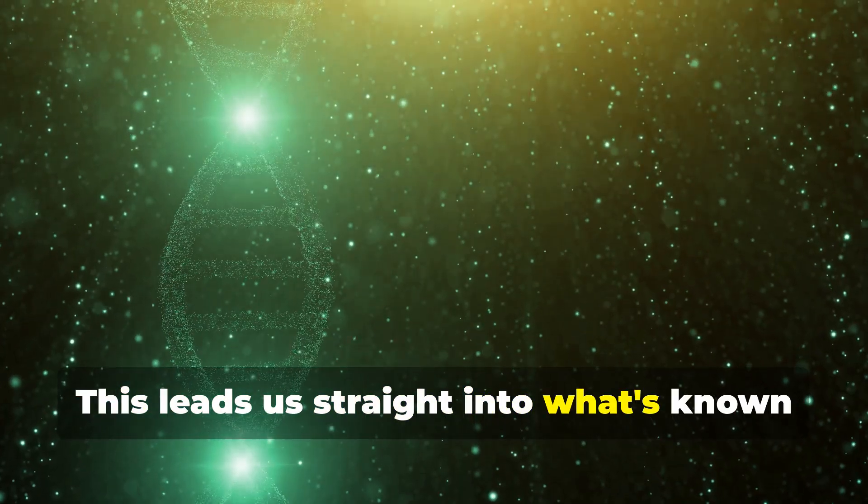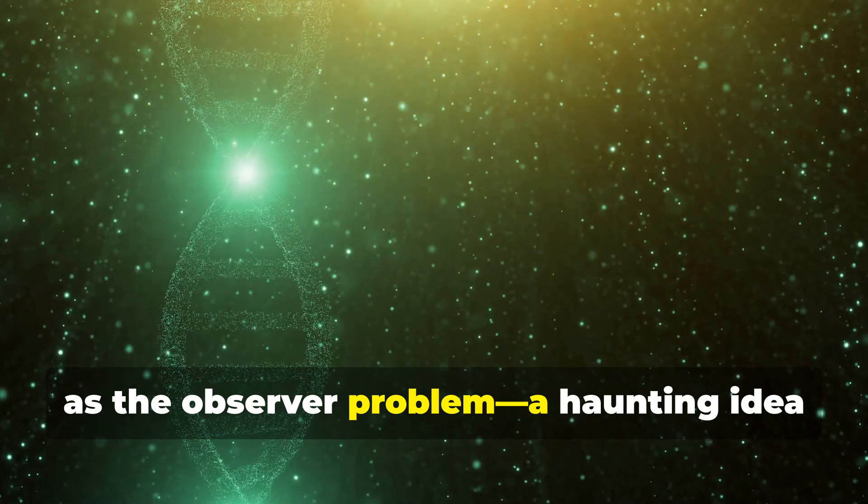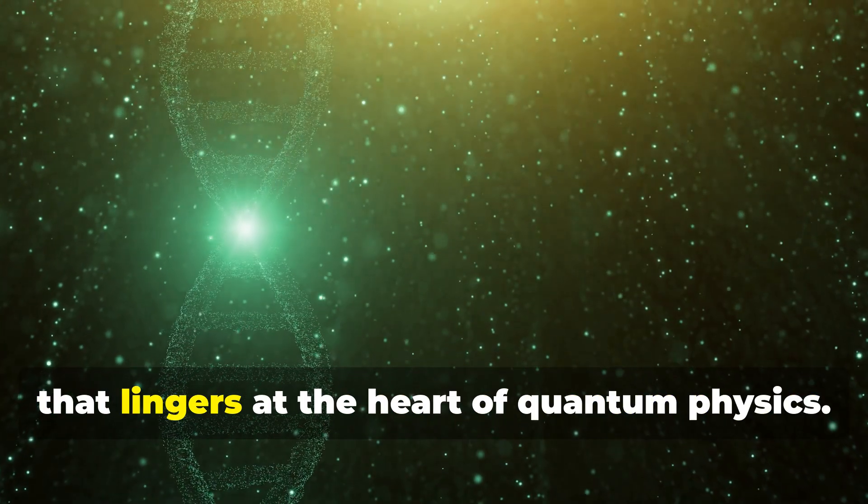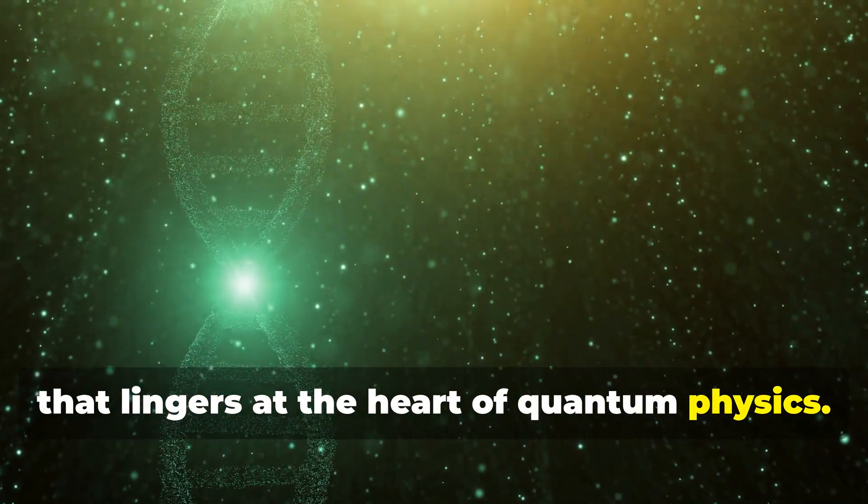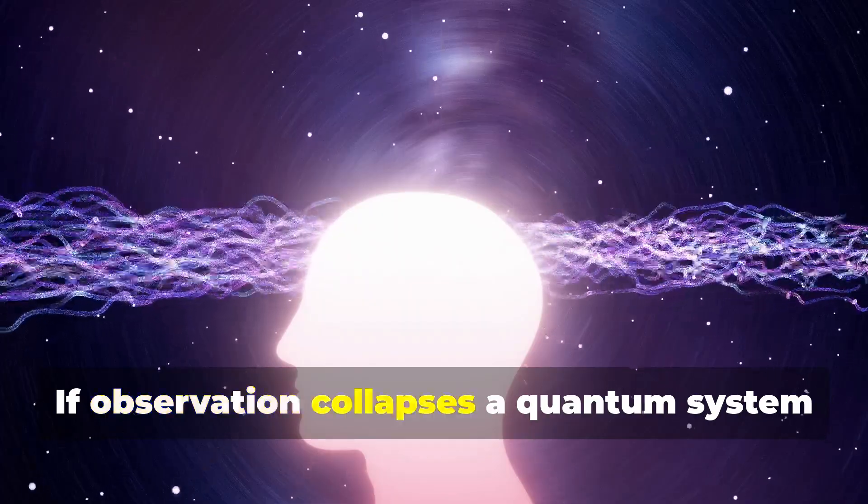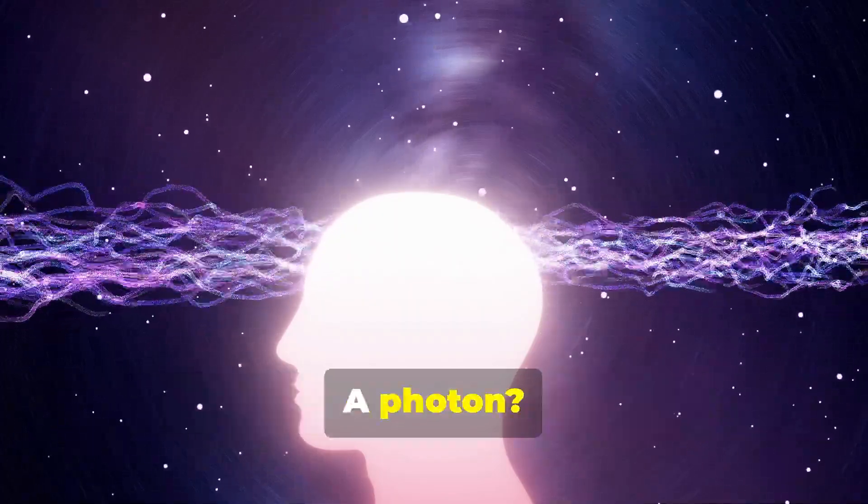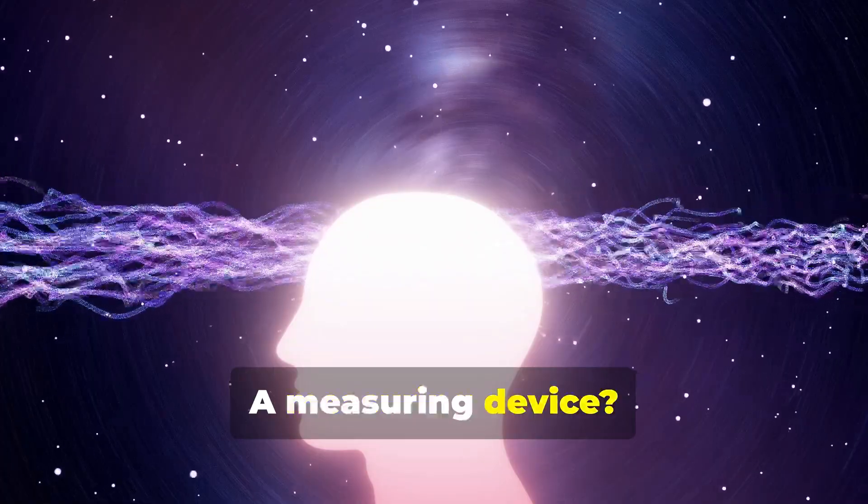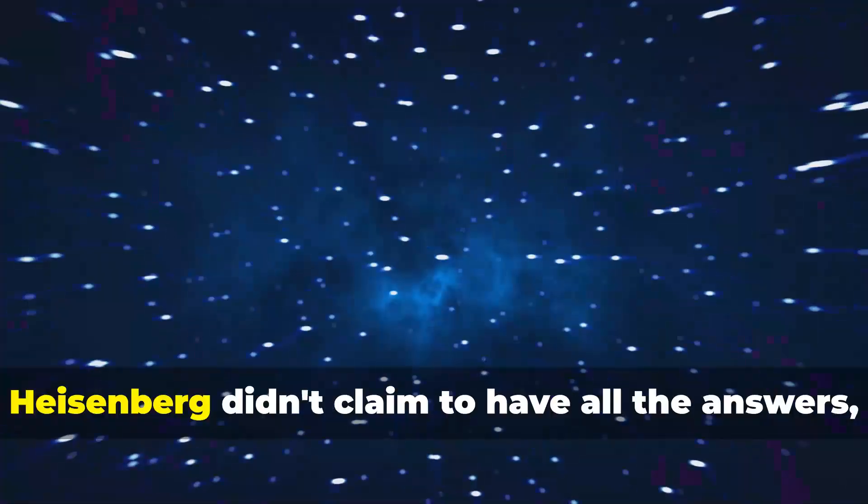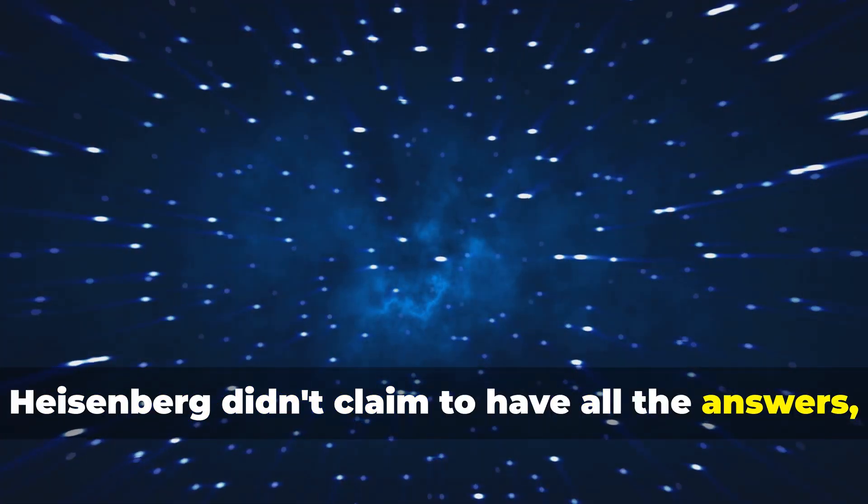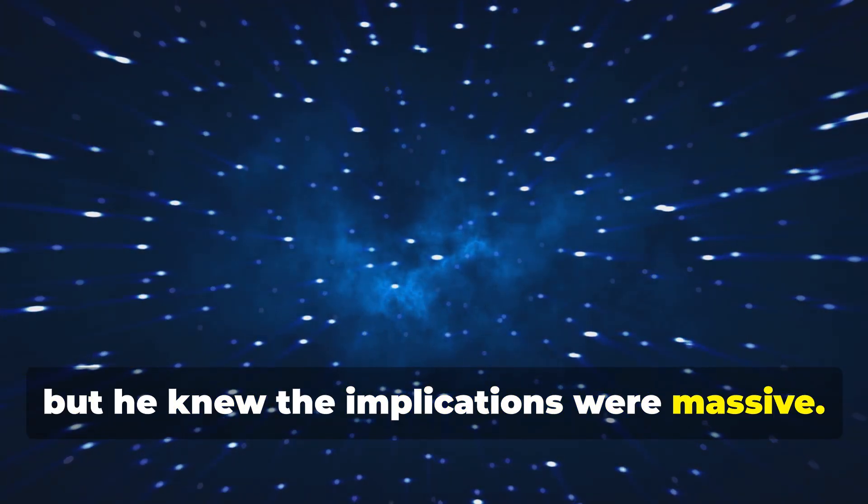This leads us straight into what's known as the observer problem, a haunting idea that lingers at the heart of quantum physics. If observation collapses a quantum system into a definite state, what counts as an observer? A photon? A measuring device? A conscious mind? Heisenberg didn't claim to have all the answers, but he knew the implications were massive.